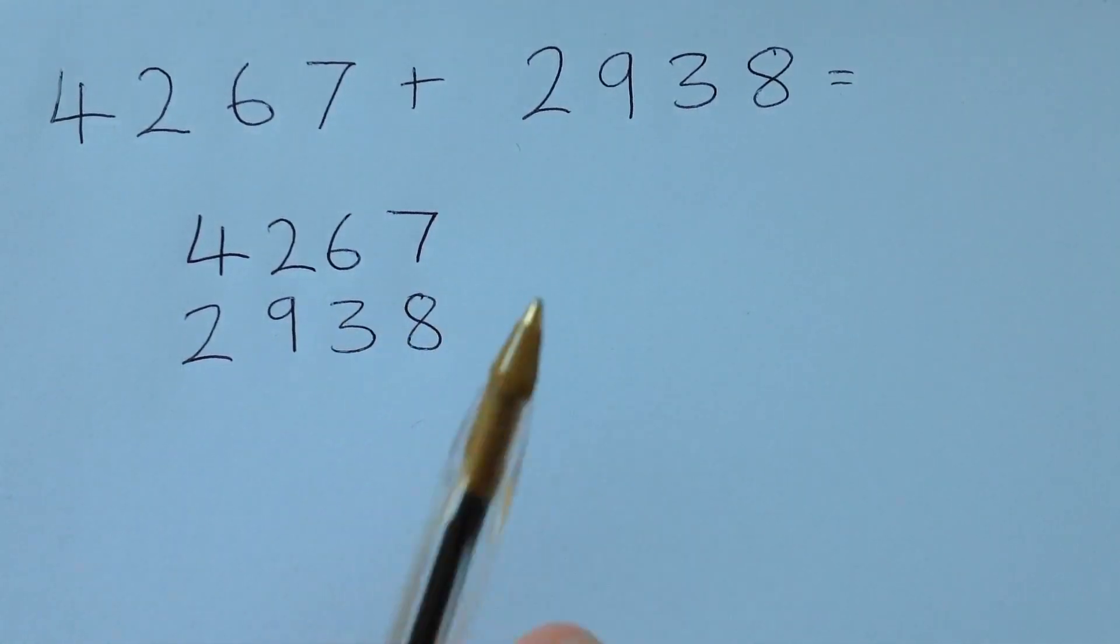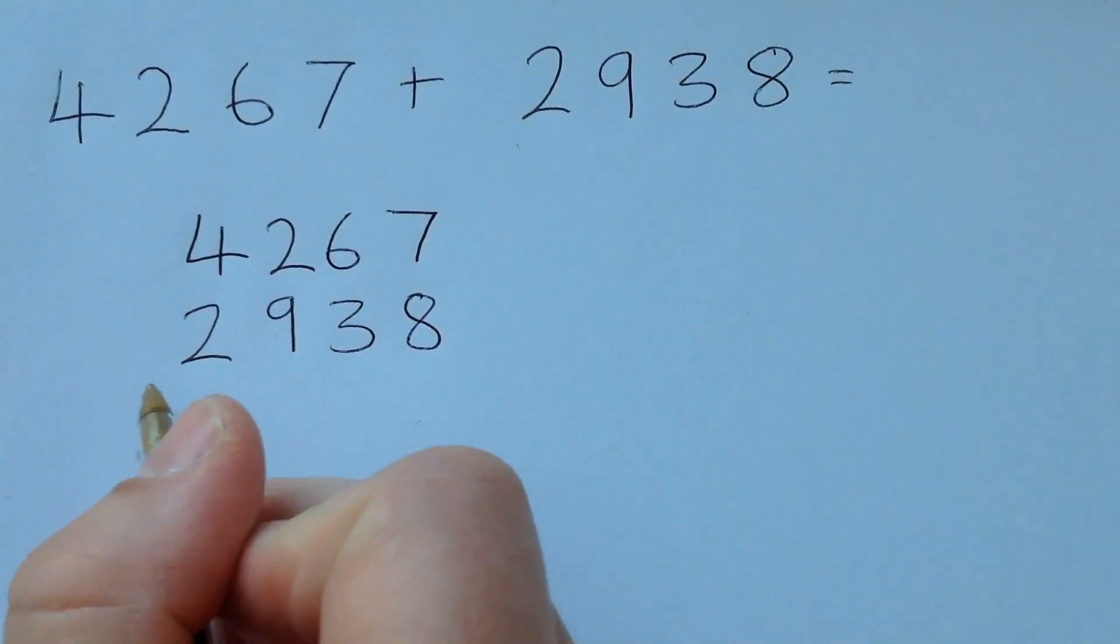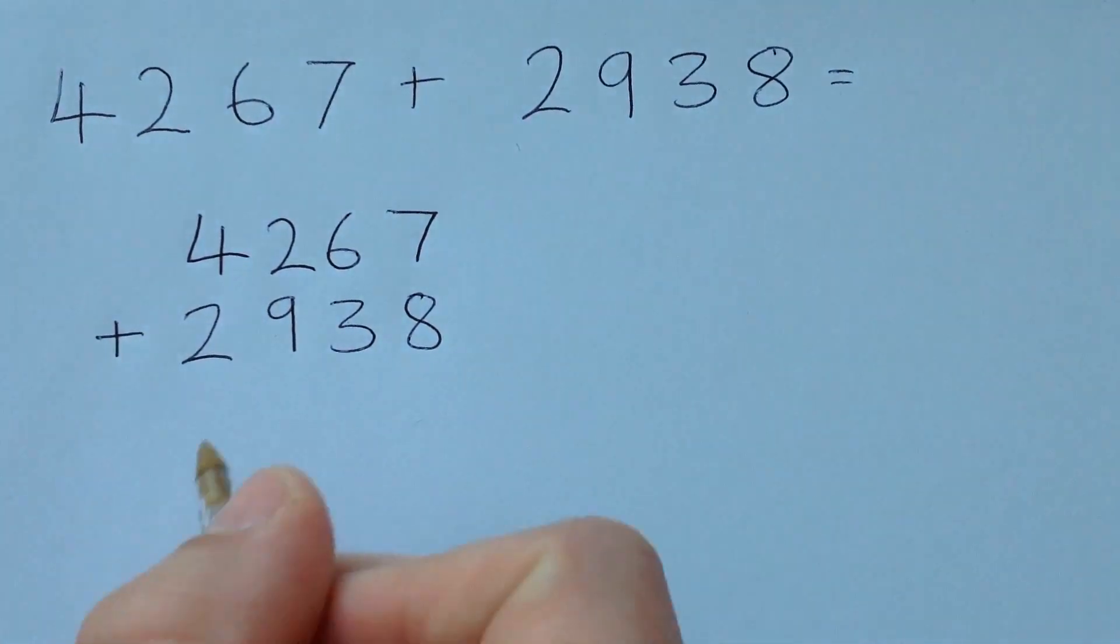So I have thousands, hundreds, tens and ones. That's going to be really important in today's lesson. I'm going to remember to put my addition symbol.